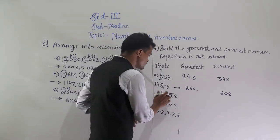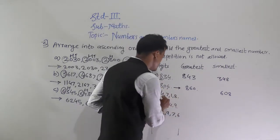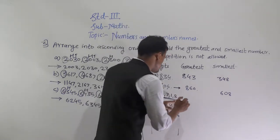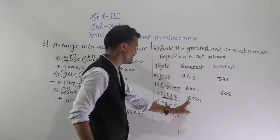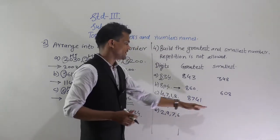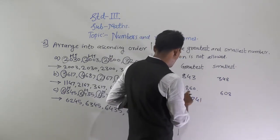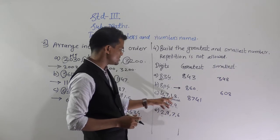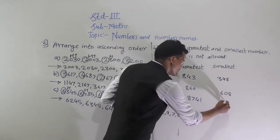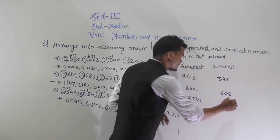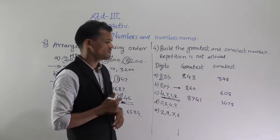Next, using digits 4, 7, 1, and 8: to form the greatest number, arrange in decreasing order — the greatest digit is 8, then 7, then 4, then 1. So 8741 is the greatest number. For the smallest number, arrange small to big: the smallest digit is 1, then 4, then 7, then 8. So 1478 is the smallest number formed.